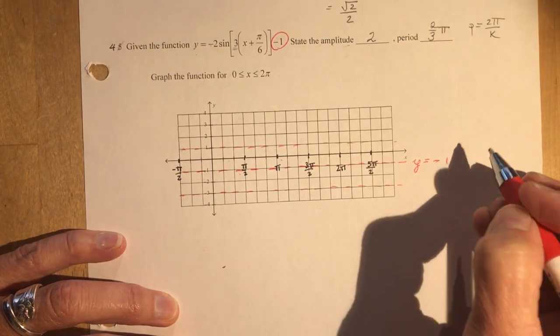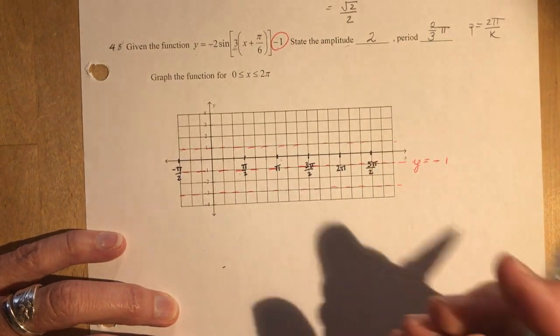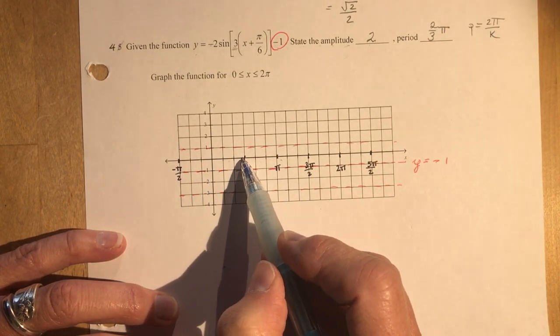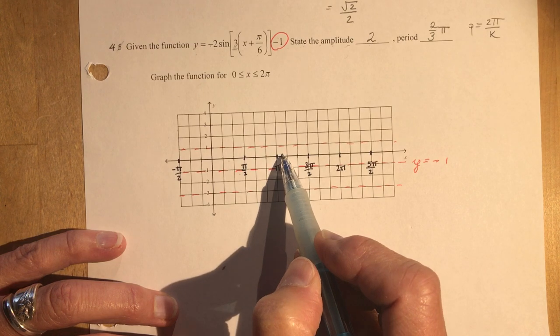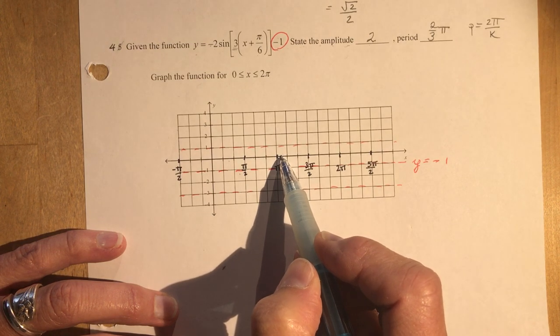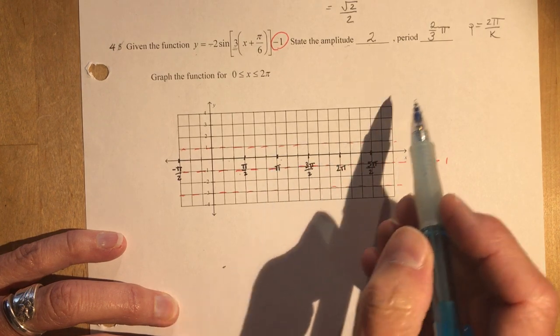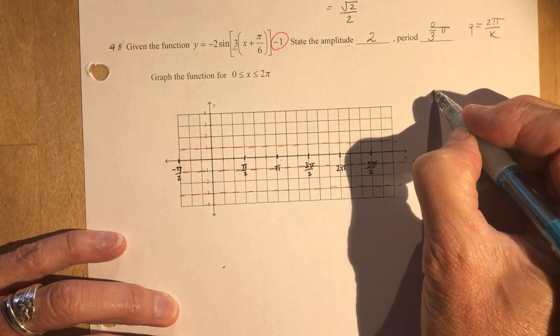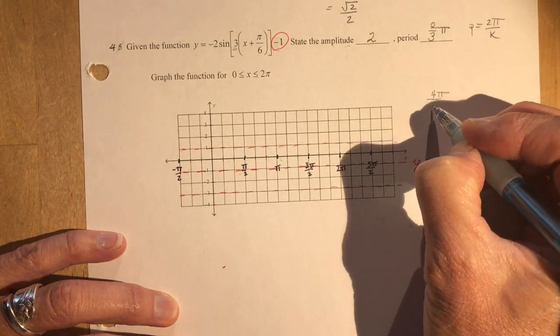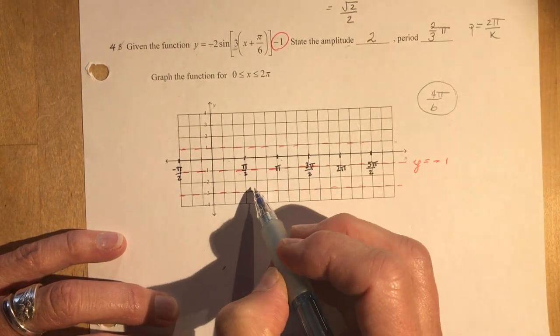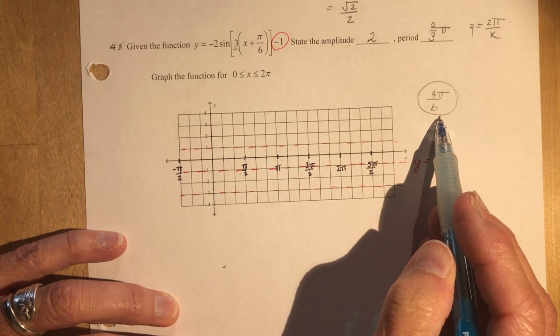Now because the period is 2 pi over 3, you might want to take a look at the scale that I've given here. So 1, 2, 3, 4, 5, 6. So this is in sixths. So 6 pi over 6 is here. 2 thirds pi, that's the same thing as 4 pi over 6. So that means this is the period, one complete cycle in 4 pi over 6.